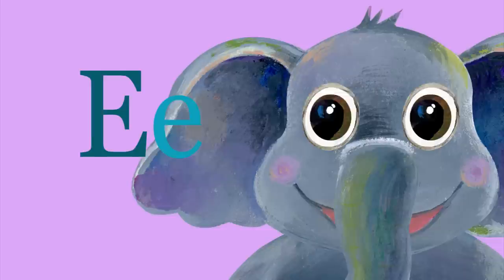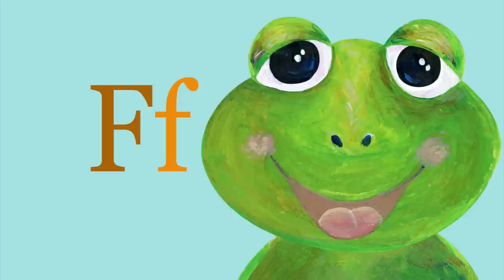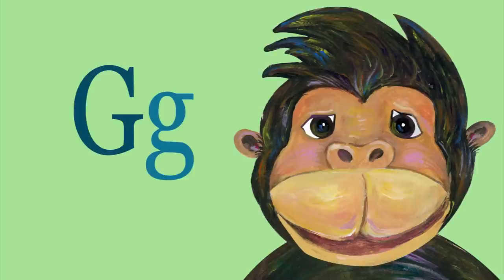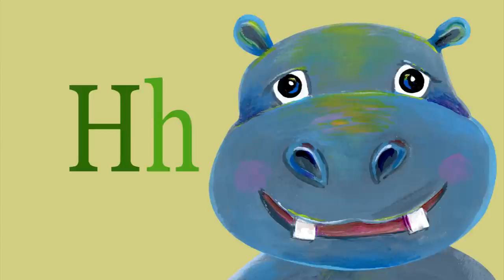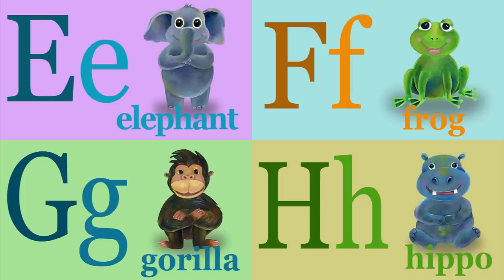E is for elephant, e-e-e-elephant. F is for frog, f-f-f-frog. G is for gorilla, g-g-gorilla. H is for hippo, h-h-h-hippo.